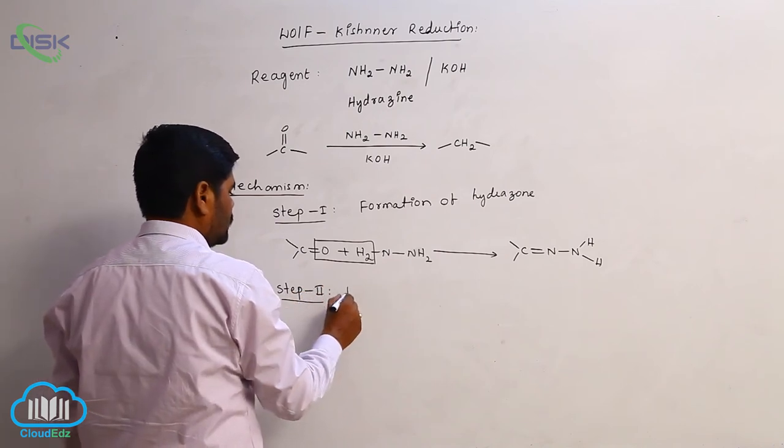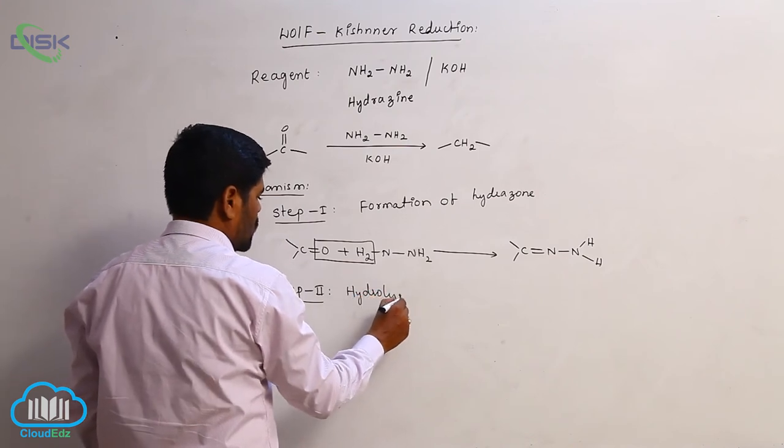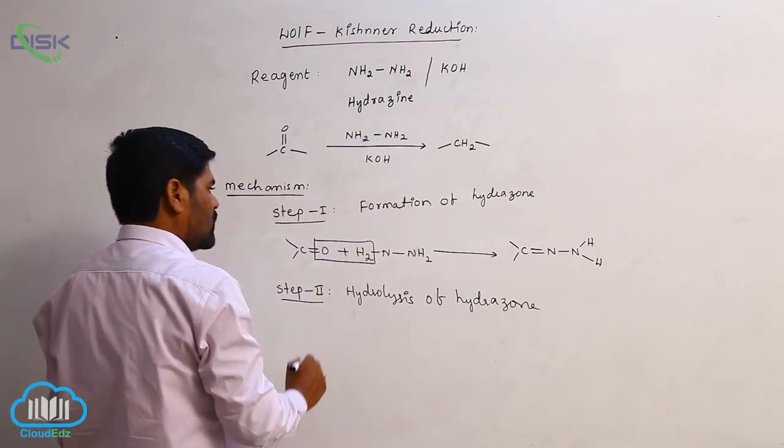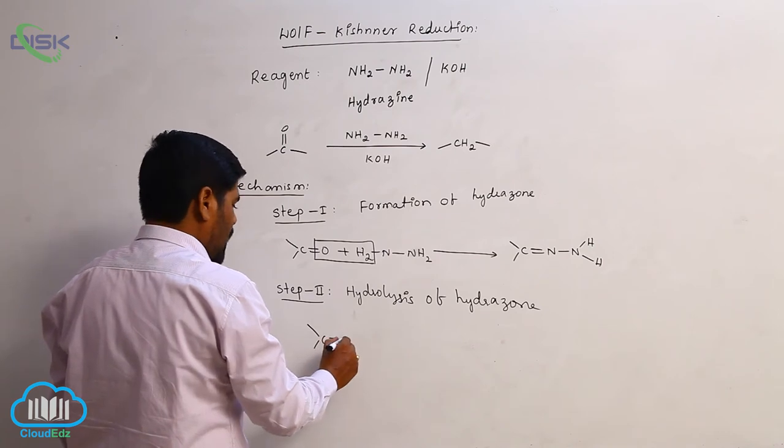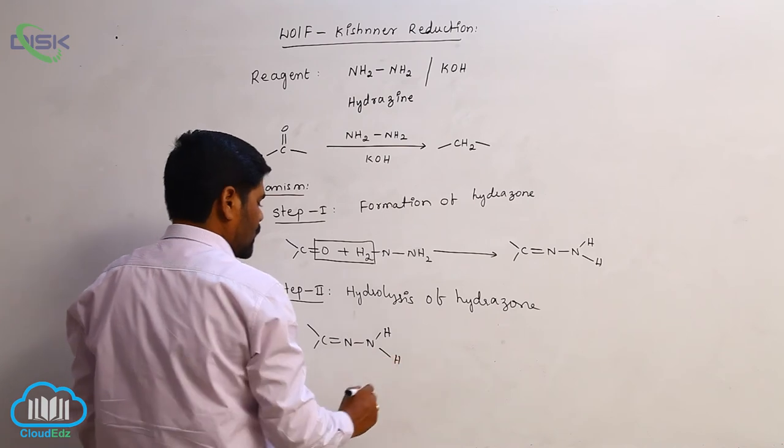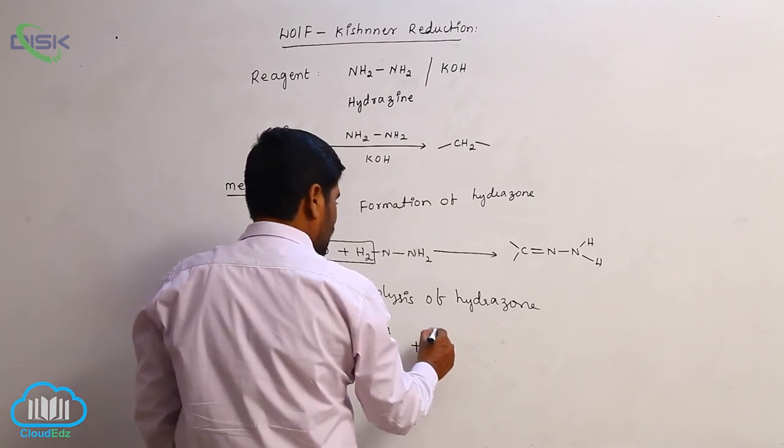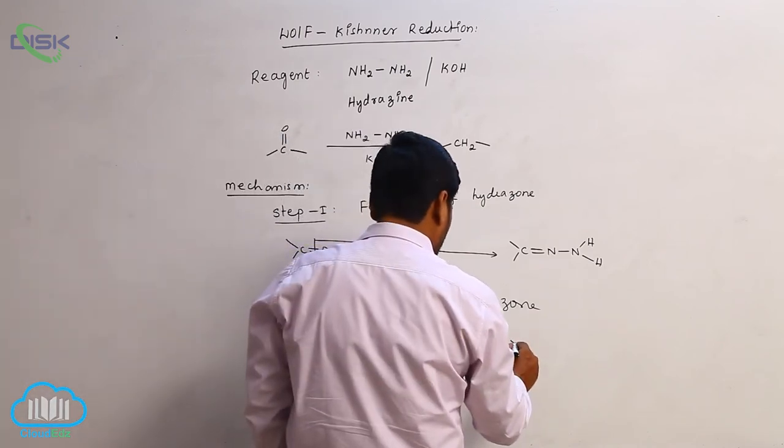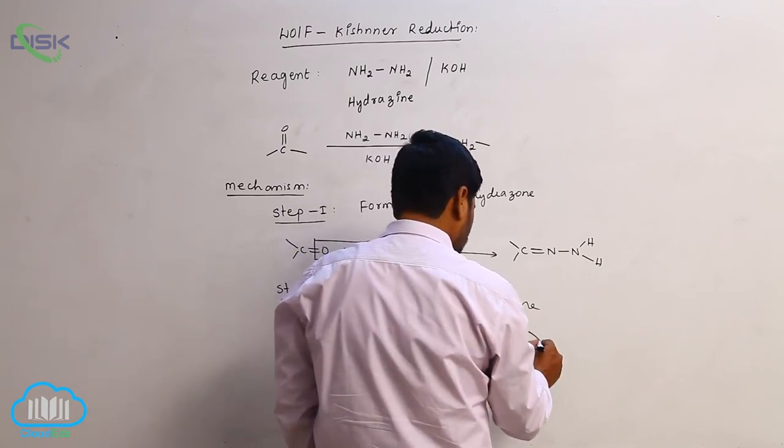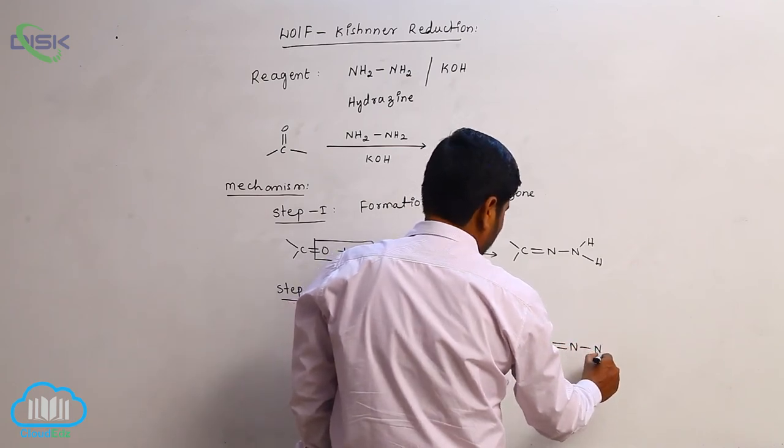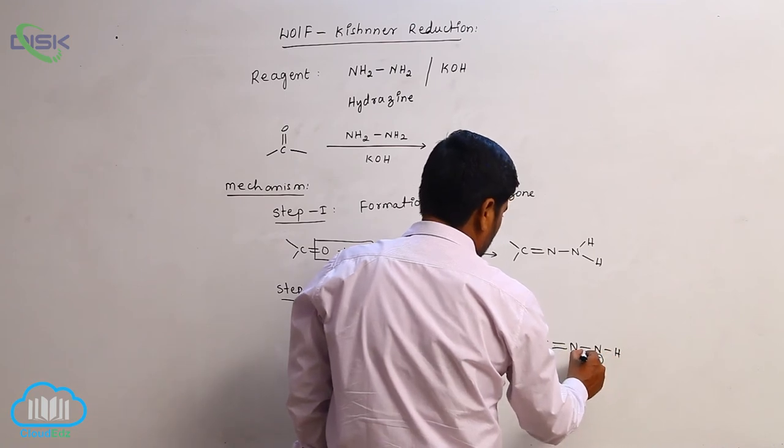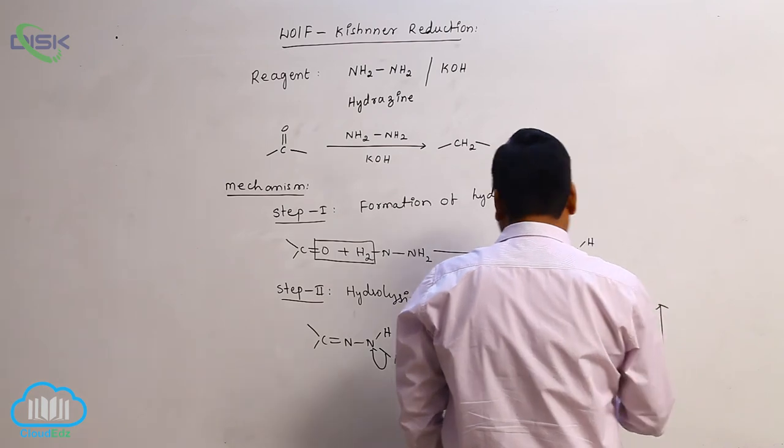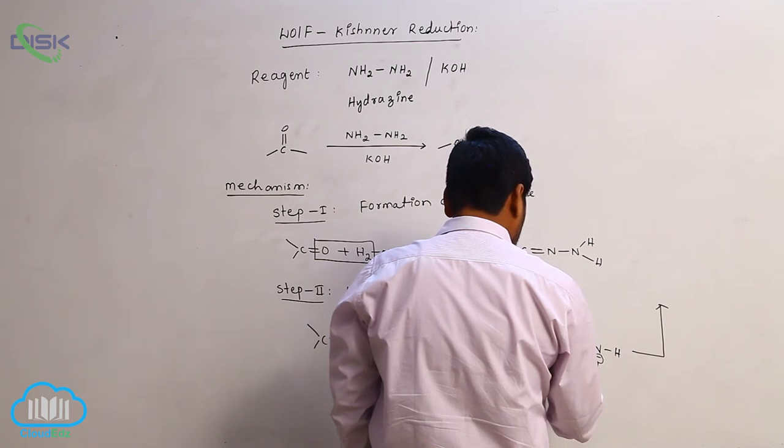Step 2 is hydrolysis of hydrazone. C double bond N with hydrogen - first it reacts with OH minus because this reaction takes place in basic medium. Now loss of water molecule takes place here. C double bond N, then here is negative charge like this. This bond comes here, this bond again comes here when double bond forms here, then immediately it gets protonated.